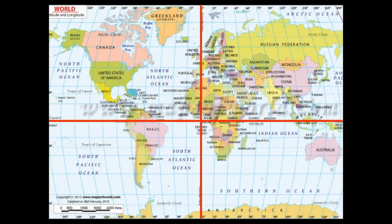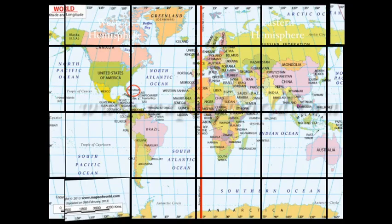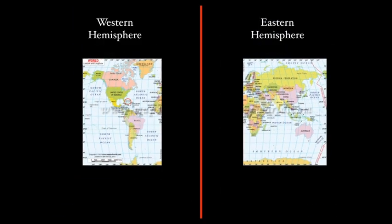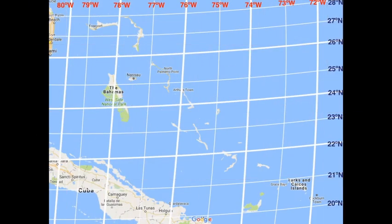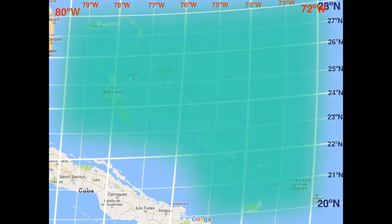Here we are. Which hemisphere can the Bahamas be found — northern or southern? Which hemisphere can the Bahamas be found — western or eastern? Using your knowledge of latitude and longitude lines, where is the Bahamas? The Bahamas can be found between latitude 20 degrees north and latitude 28 degrees north, and between longitude 72 degrees west and 80 degrees west.